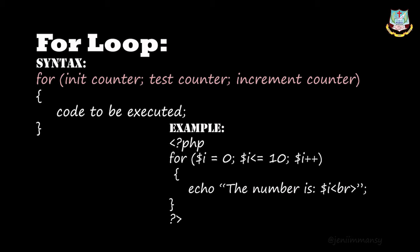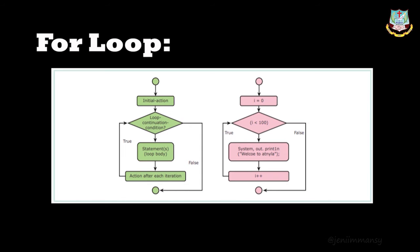For this for loop, they have given a flowchart. First, the initialization — the value i equals 0. Then the condition is given in the diamond box. i less than 100 is the condition. Whether the loop continues or ends is decided by this conditional box. If the condition is true, the statement or code inside the for loop is executed. Then it increments one value and checks the condition again. If false, the process ends.